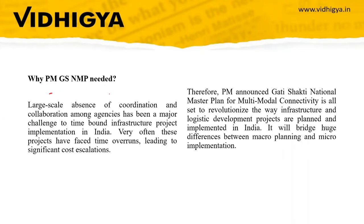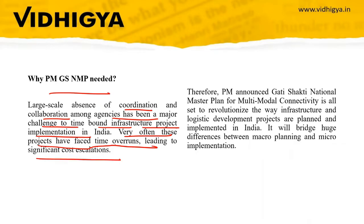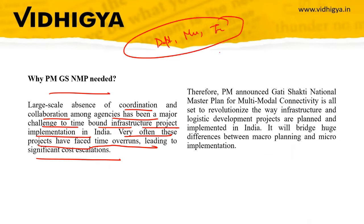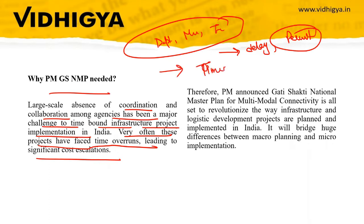The large-scale absence of coordination and collaboration among agencies has been a major challenge to time-bound infrastructure project implementation in India. These projects have very often faced time overruns because there is no coordination between different departments, different ministries, and different institutions. This leads to delays in clearances and all other permits required for infrastructure projects.